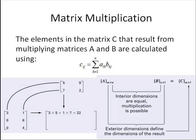First of all, let's talk about matrix multiplication. Matrix multiplication is defined as follows. The elements in the matrix C that result from multiplying the matrices A and B are calculated using this summation. If you're not familiar with that notation, that sigma is a summation sign. That notation will become more clear as we go through this numerical example down here in the left-hand corner.